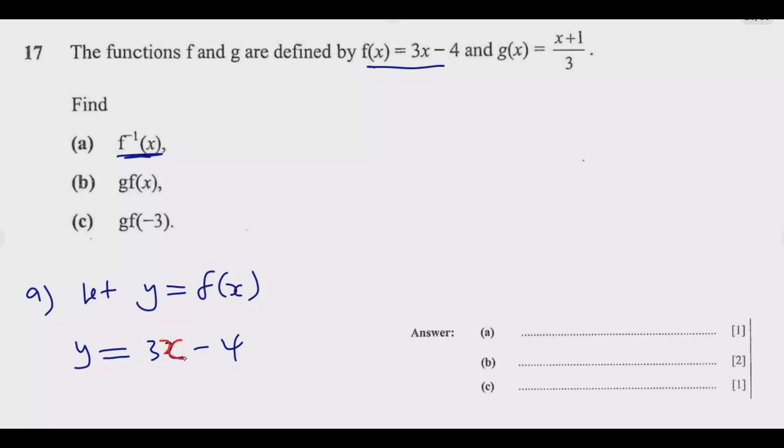Once you make x the subject of the formula, then you're almost done. We're going to have y plus 4, so the moment this one crosses the equal sign it becomes positive, equals 3x. Then we divide by 3 on both sides.